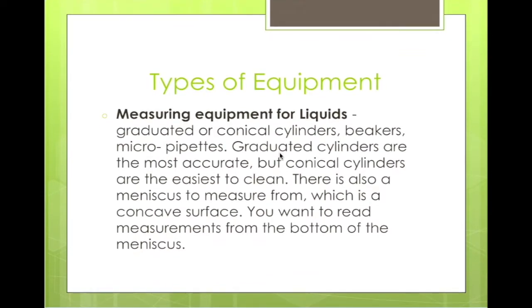For types of equipment measuring liquids, there are graduated or conical cylinders, beakers, and micropipettes. Graduated cylinders are the most accurate. Conical cylinders are the easiest to clean. There's also a meniscus to measure from, which is a concave surface — you want to read the measurement from the bottom of the meniscus.